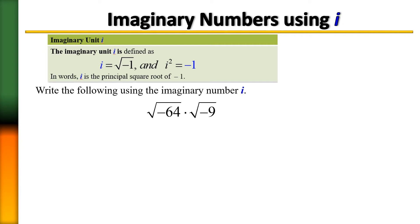Where does that rule come from? For example, the square root of 25 is 5, and if you square that — doing the very opposite of square root — 5 squared equals 25. The same applies to i: the square root of negative 1 equals i, and if we square i it equals negative 1. So every time you see i squared, by definition it equals negative 1.